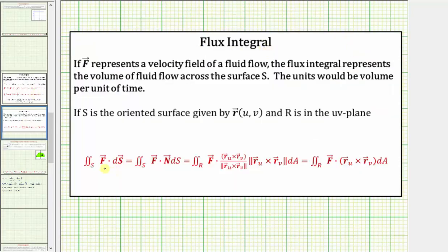A flux integral is normally given in one of two forms. If the vector field F represents a velocity field of a fluid flow, the flux integral represents the volume of fluid flow across the surface S, with units of volume per unit of time. If S is the oriented surface given by R(u,v), and R is the region in the UV plane (the projection of S onto the UV plane), then the flux integral equals the double integral over R of F dot (∂R/∂u × ∂R/∂v) dA, where dA = du dv or dv du.